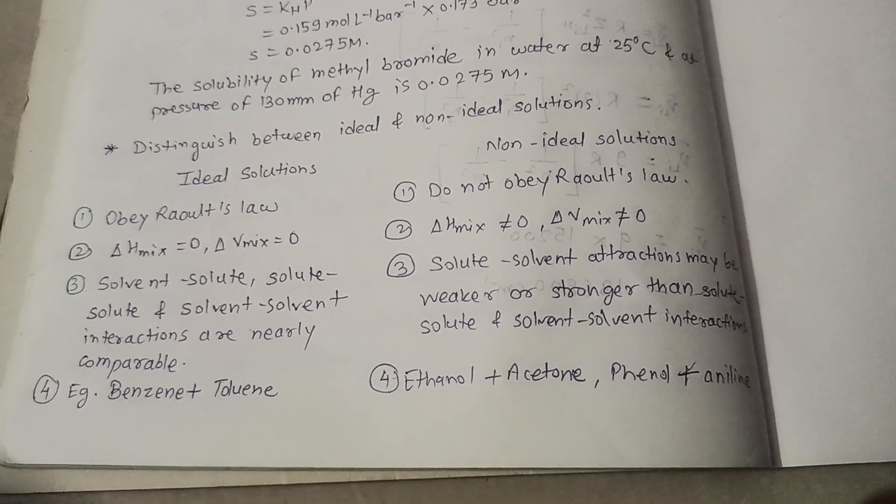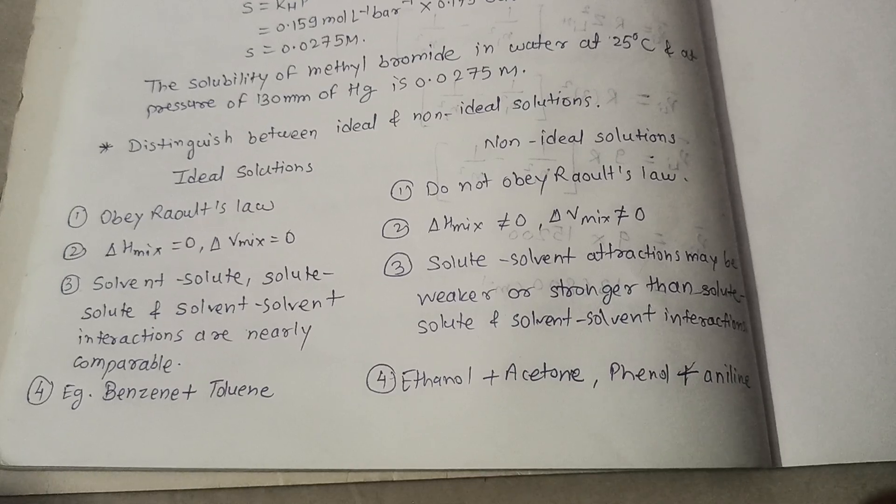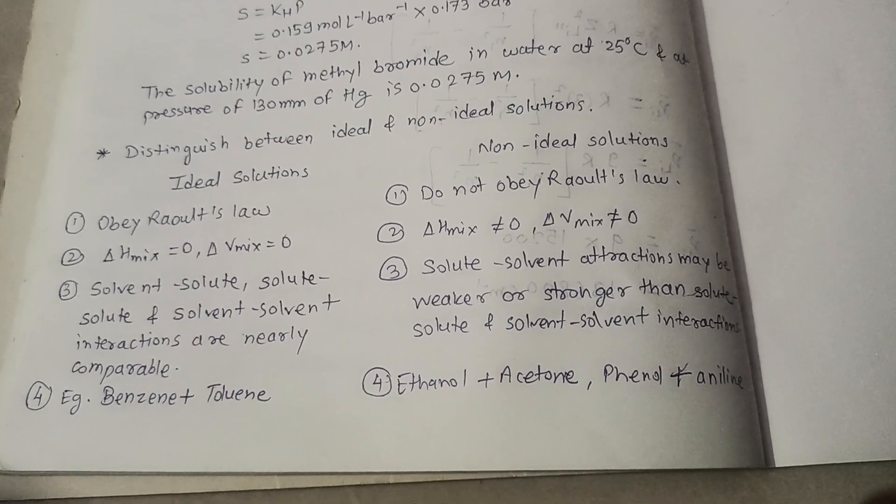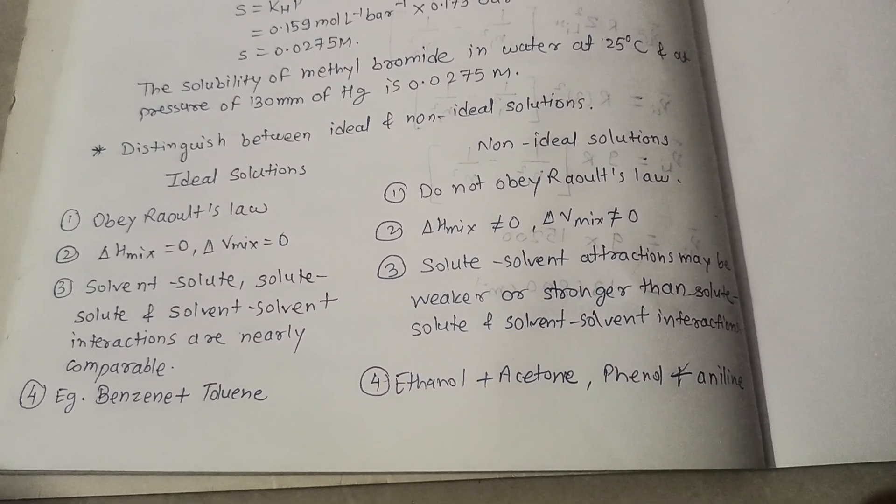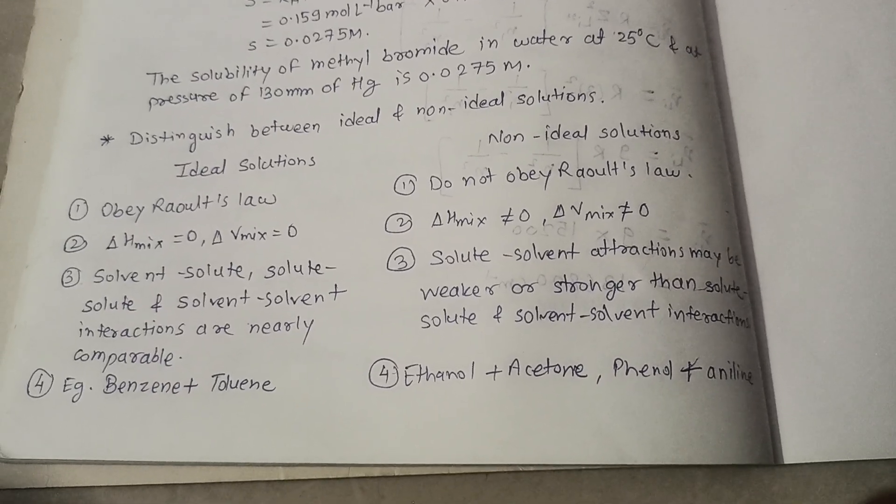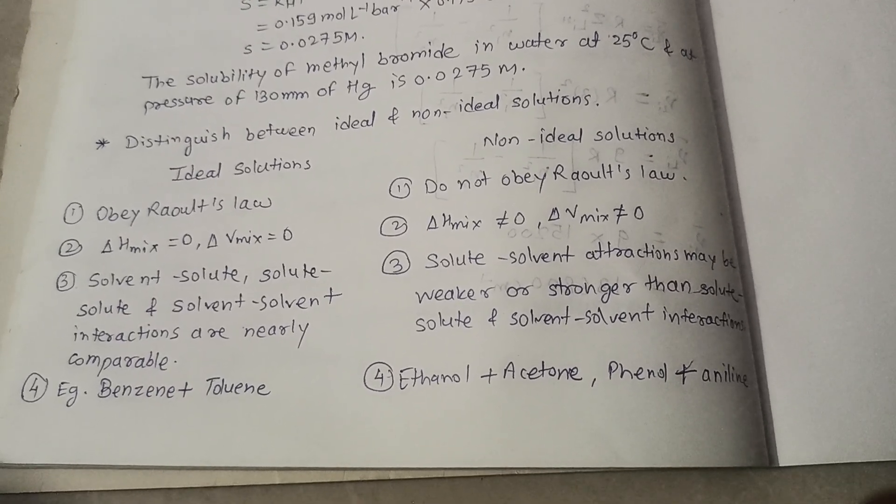Delta H of mixing is zero and delta V of mixing is also zero for ideal solutions, means enthalpy of mixing and volume of mixing is zero for ideal solutions. For non-ideal, they are not equal to zero.